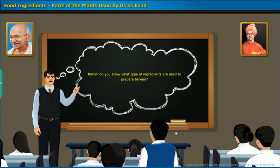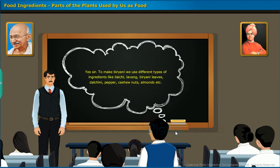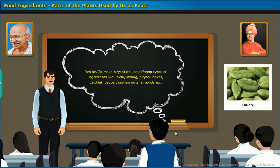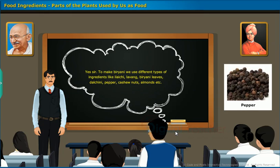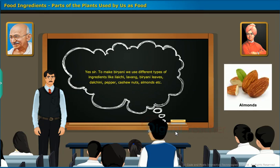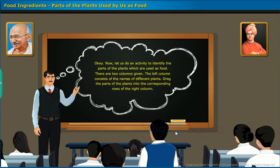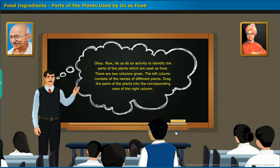Raheem, do you know what type of ingredients are used to prepare biryani? To make biryani, we use different types of ingredients like elachi, lavang, biryani leaves, dalcini, pepper, cashew nuts, almonds, etc. Now let us do an activity to identify the parts of plants which are used as food. Two columns are given — the left column has names of different plants. Drag the parts of the plants into the corresponding rows of the right column.